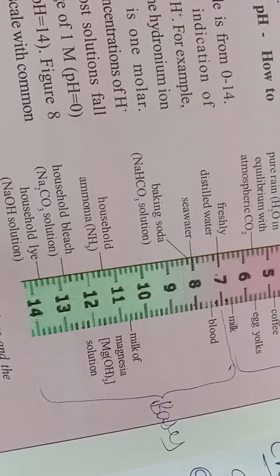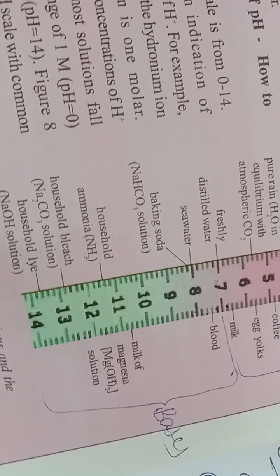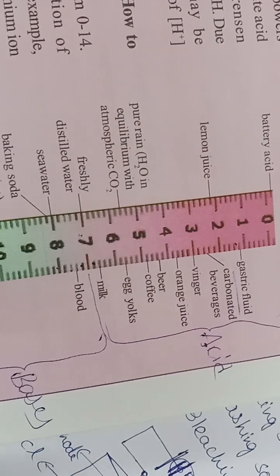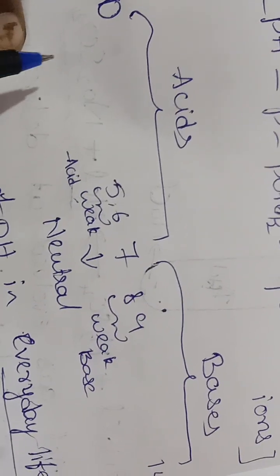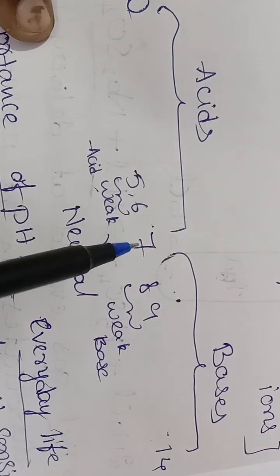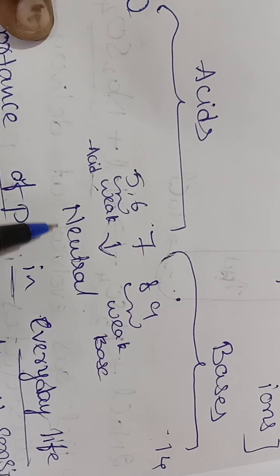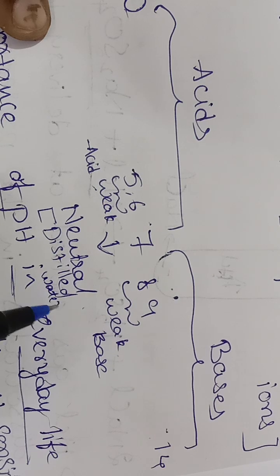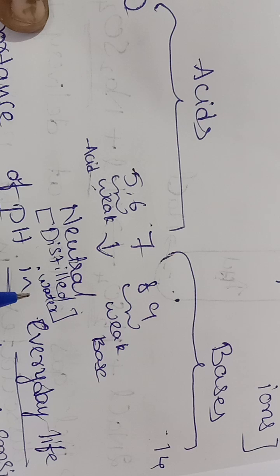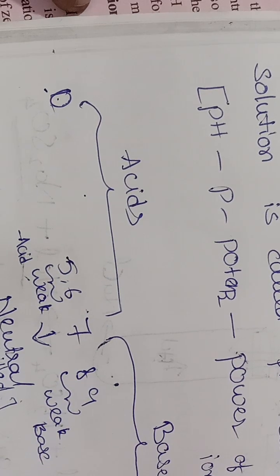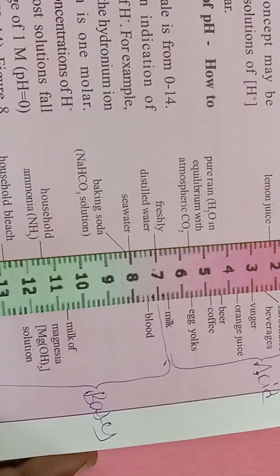Generally, pH values lie between 0 to 14. Values from 0 to 7 are called acids; 7 to 14 are called bases; and if you get a pH value of exactly 7, that is a neutral solution. The example for a neutral solution is distilled water - not general water. Distilled water is a neutral solution and will not conduct electricity, even though it is water.